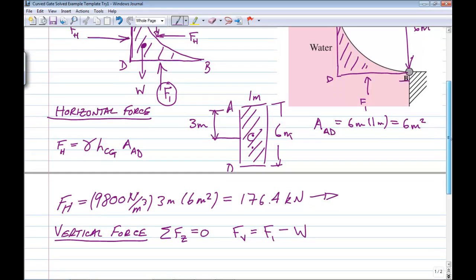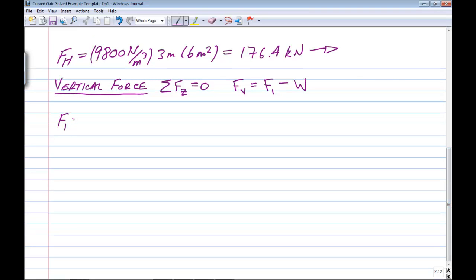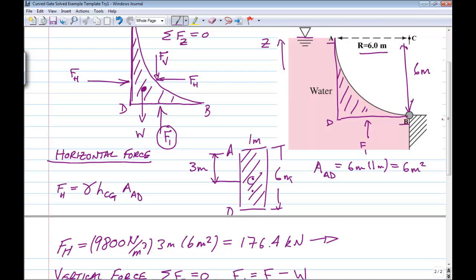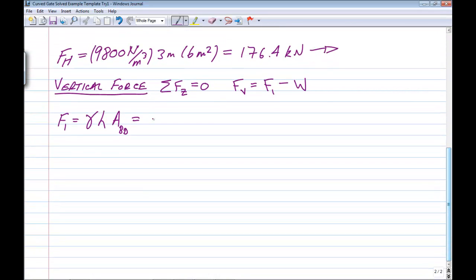So let's continue to calculate that. So F1 equals gamma H times the surface area BD. This surface of consideration BD is six meters in depth. So we have 9800 newtons per cubic meter. It's six meters below the free surface. And the area of that surface is a plain horizontal surface in this case, six meters wide by one meter deep. And that works out to 352.8 kilonewtons. And of course, that's going to be an upward force.